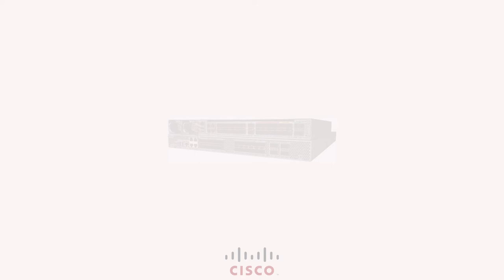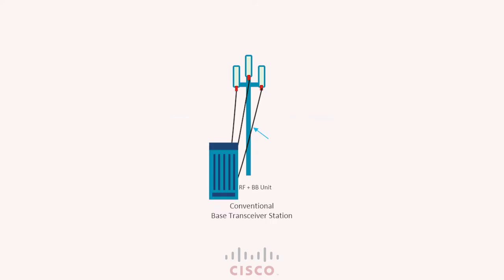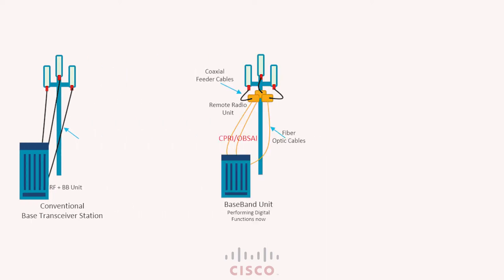Now let us look at how RAN has evolved over time and how CPRI has changed with it. In conventional BTS from 2G days, we had the antenna sitting atop a tower with feeder cables running down to a cabinet that had a combined RF and baseband processing unit inside it. With the need for more RAN efficiency and transmission quality, we broke that single unit into two different ones during the 3G days. The radio unit — also called the remote radio unit — was now mounted on the tower along with the antennas, and we ran an optical fiber cable from the radio unit to a baseband unit sitting inside a cabinet below. The technology used to communicate between the RU and BBU was chosen to be CPRI. This kind of installation is also known as a distributed RAN architecture.